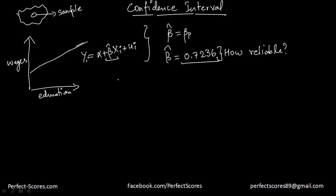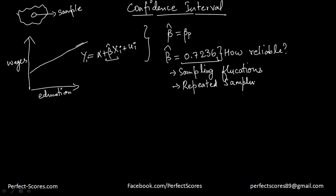The most important part is understanding how reliable this value of beta hat is. How close is it to the actual population parameter? There are a lot of reasons why reliability can be a problem — reasons like sampling fluctuations, because of which the true value of beta will not equal the beta hat we actually get. If we keep on performing repeated sampling and increasing the sample size, we know that the expected value of beta hat is going to be equal to the actual population parameter.